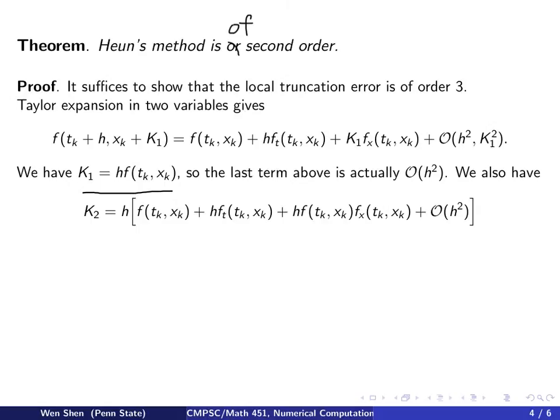We see that K1 would equal to h times f, so it's of order h. So, actually the final term here, the whole thing is just of order h square because K1 square is of order h square. And then we can write out K2. K2 is just h times this f here and write out its expansion. We get that.